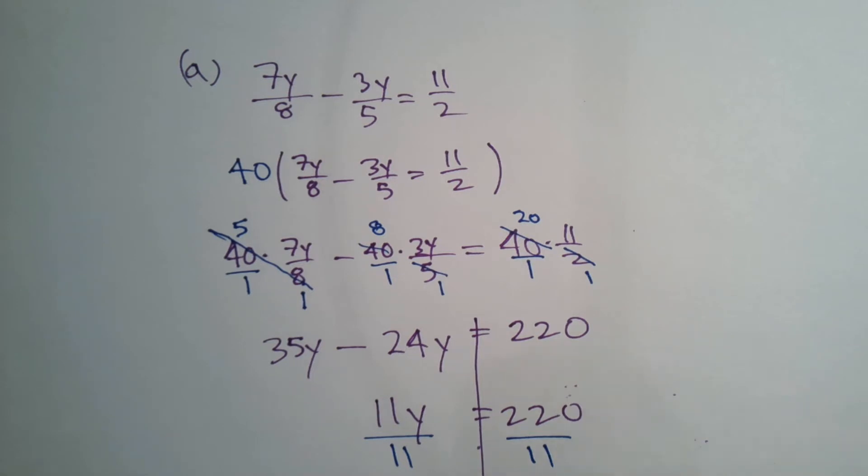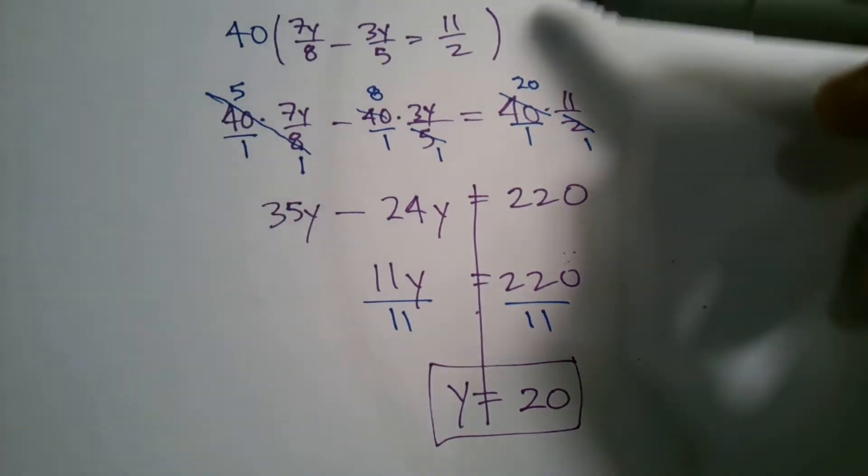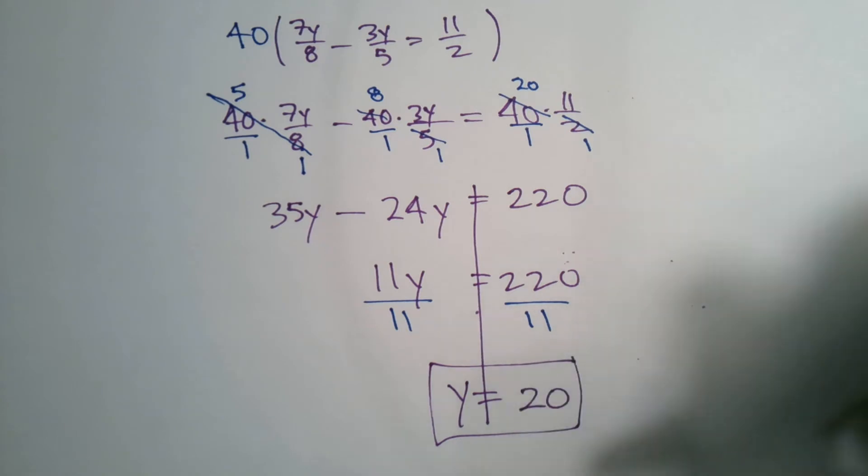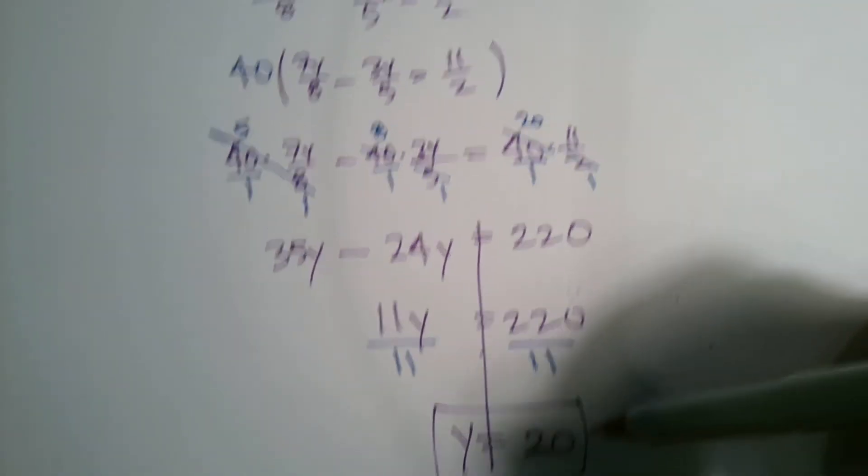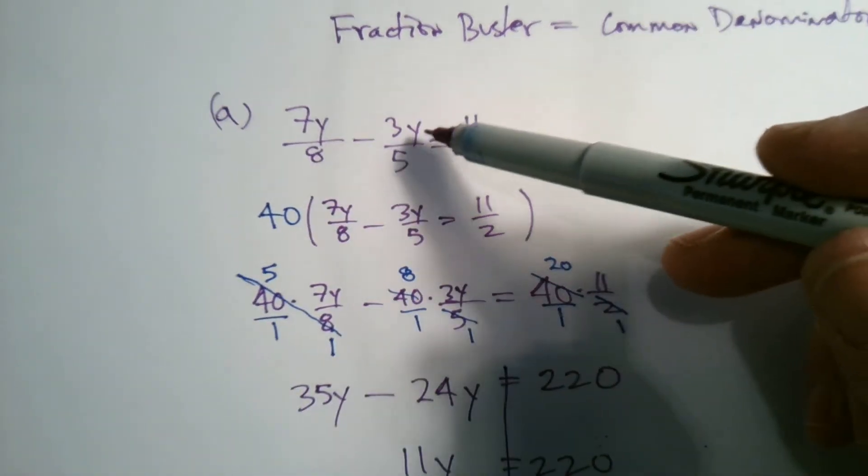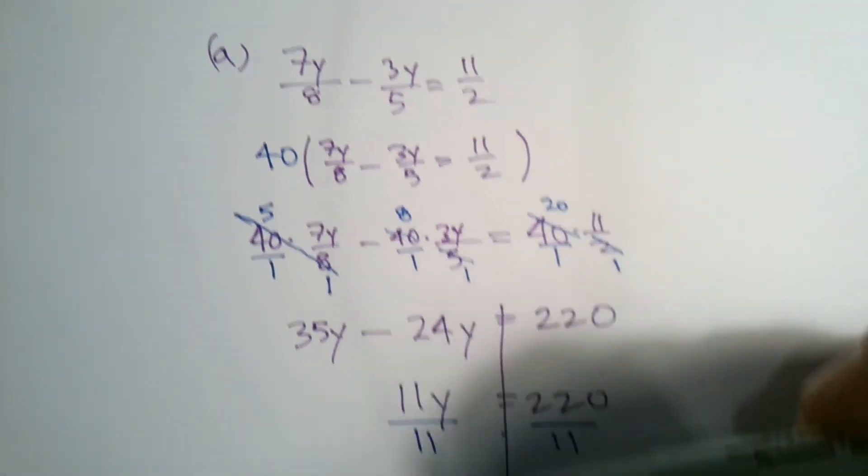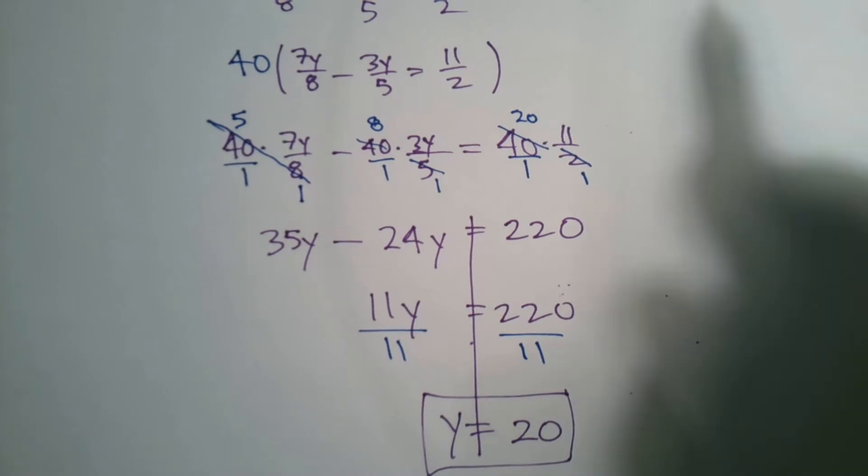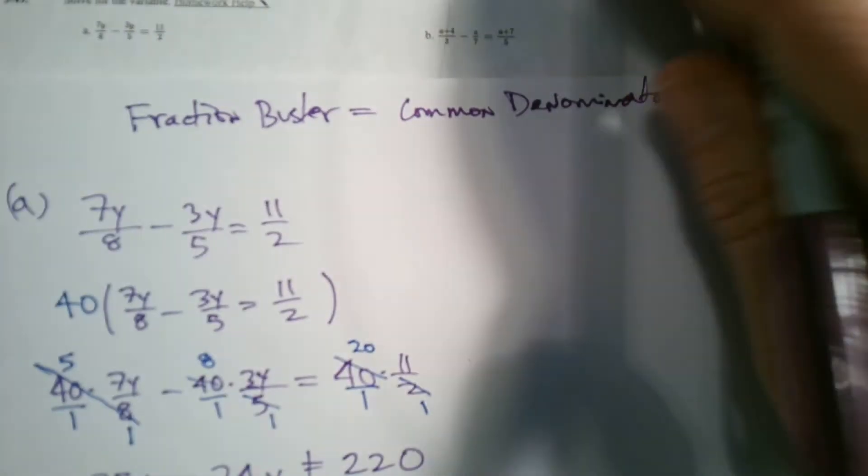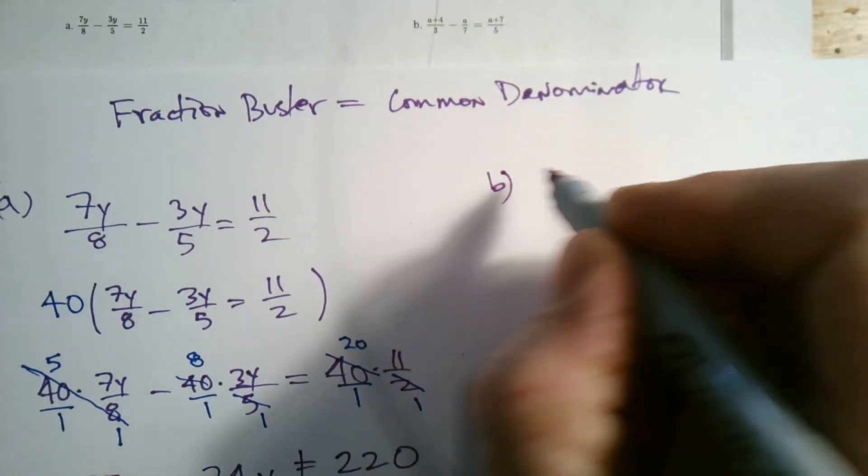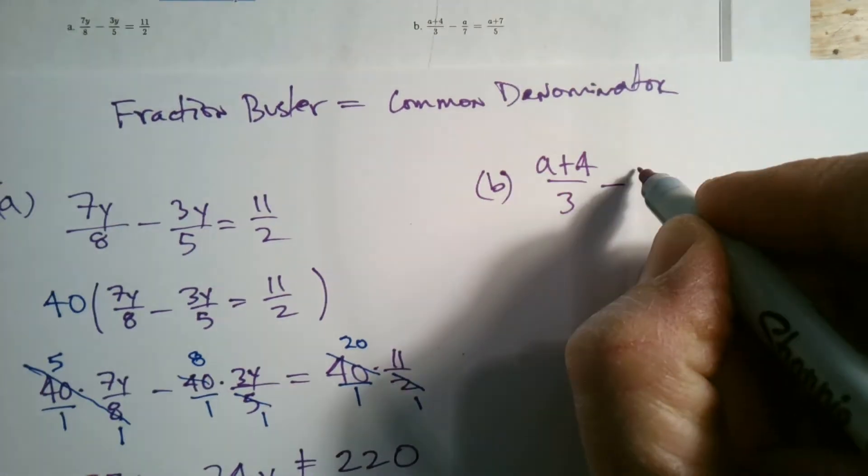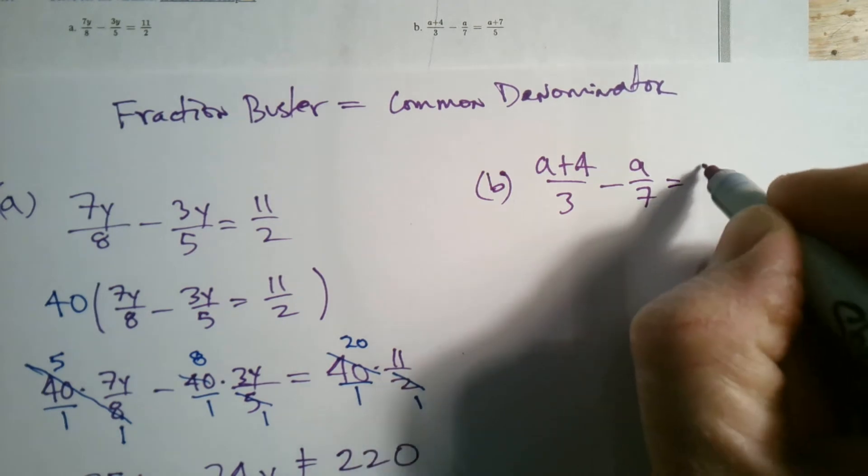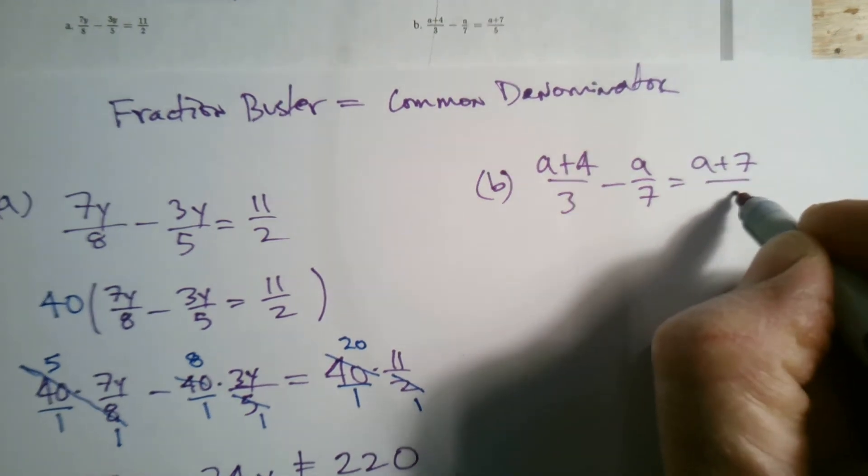Okay, so that is the process of using a fraction buster to solve an equation. The whole goal was to find out what y is - what y makes this true - and that was a process in which using a fraction buster. So let's quickly look at the next one, which is B. B says: a plus 4 over 3 minus a over 7 equals a plus 7 over 5.